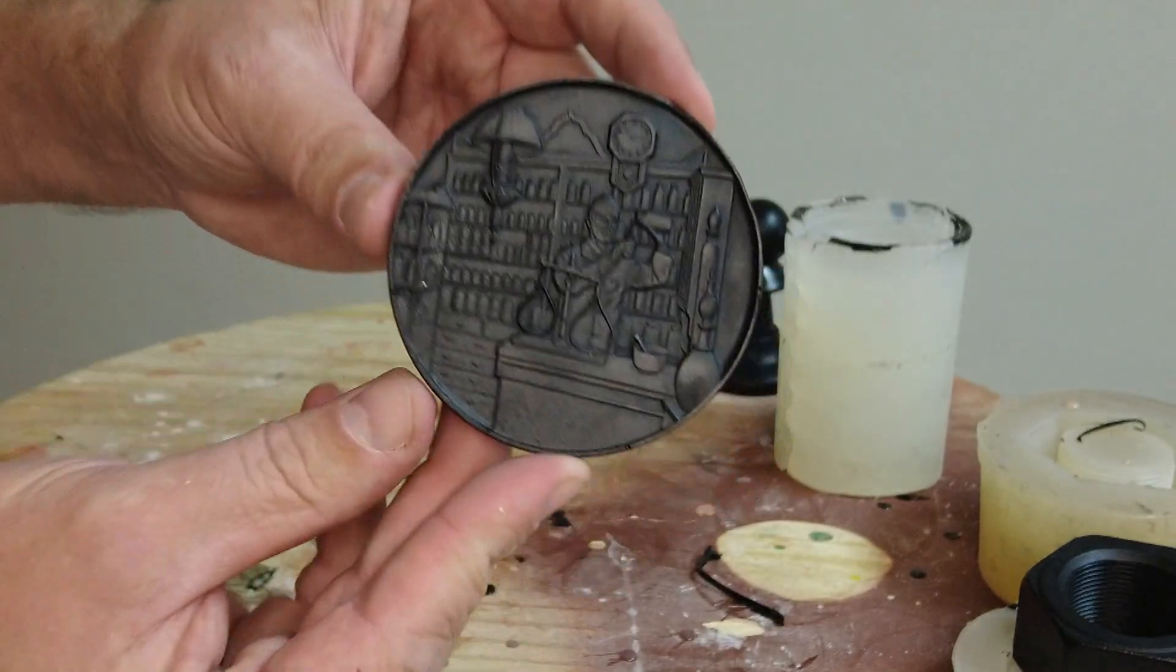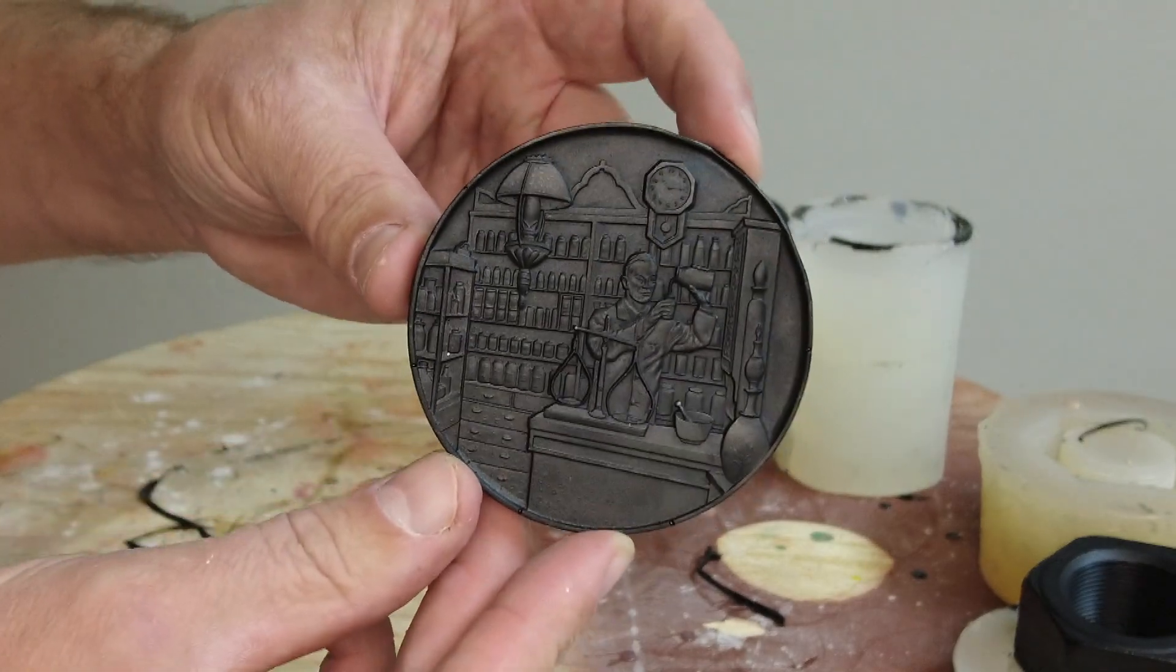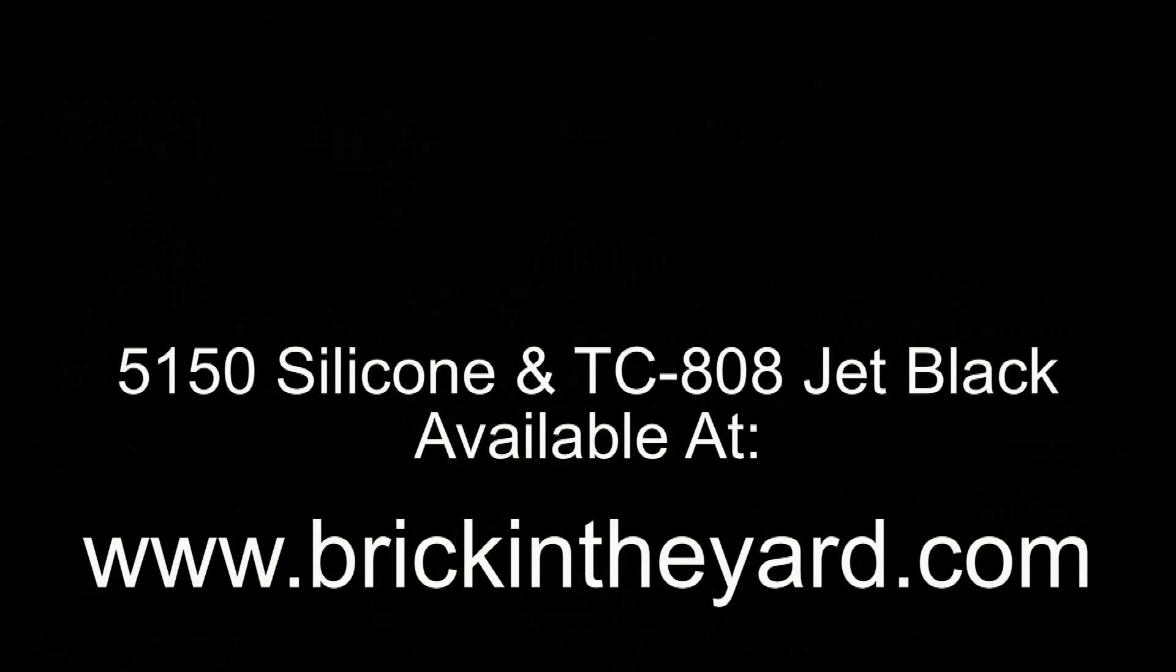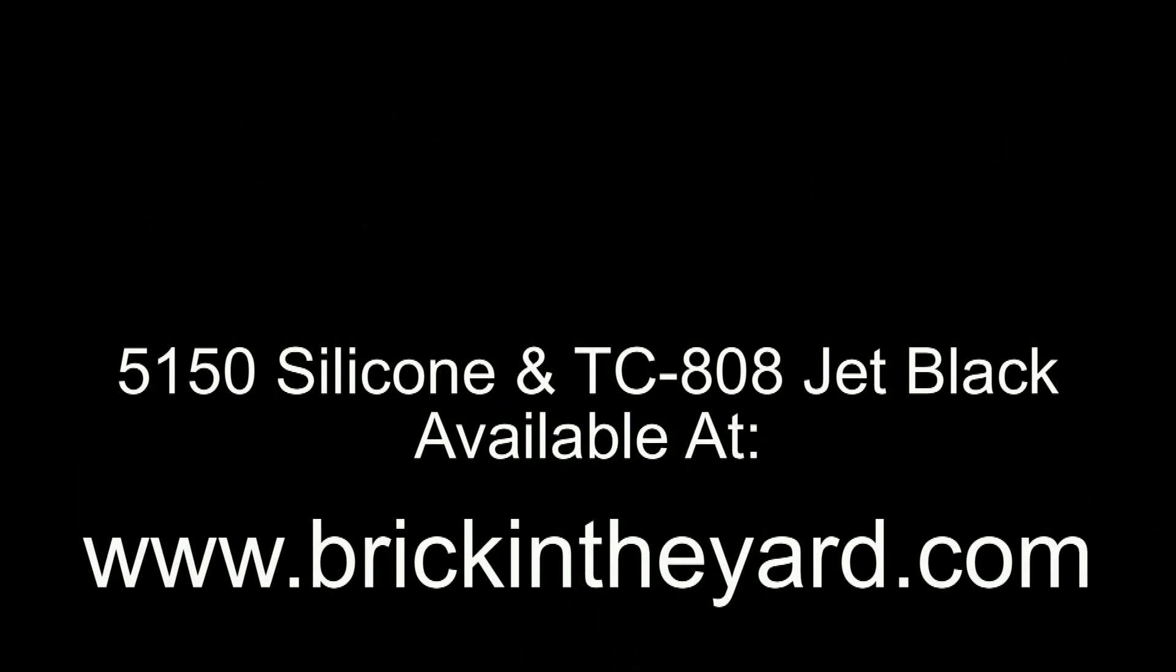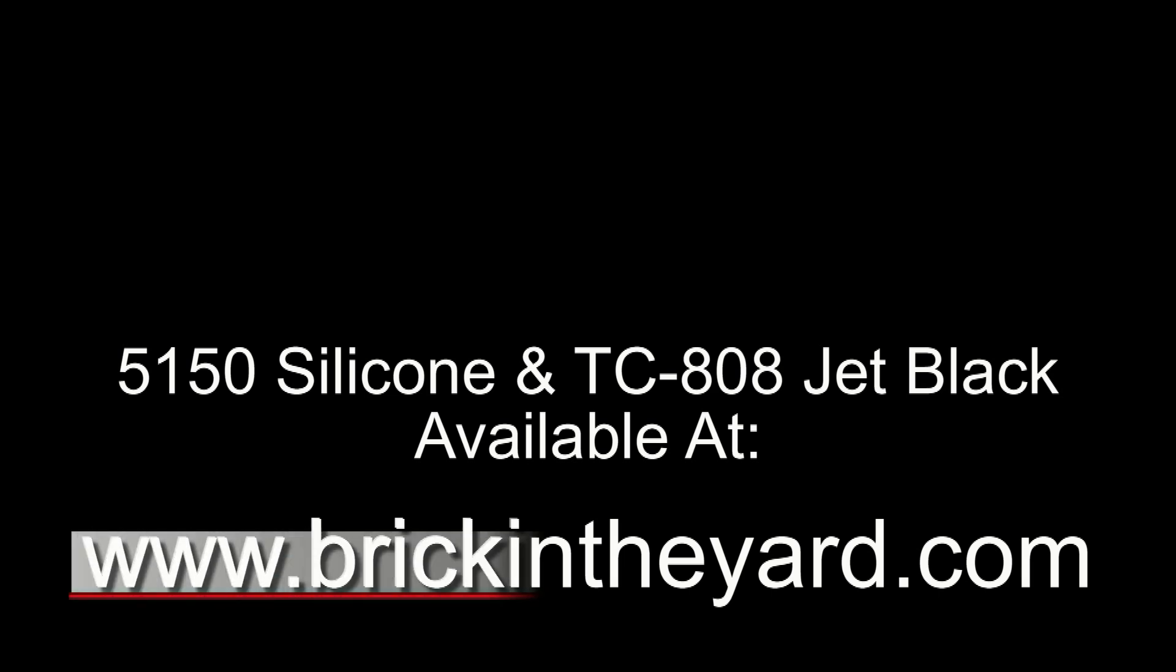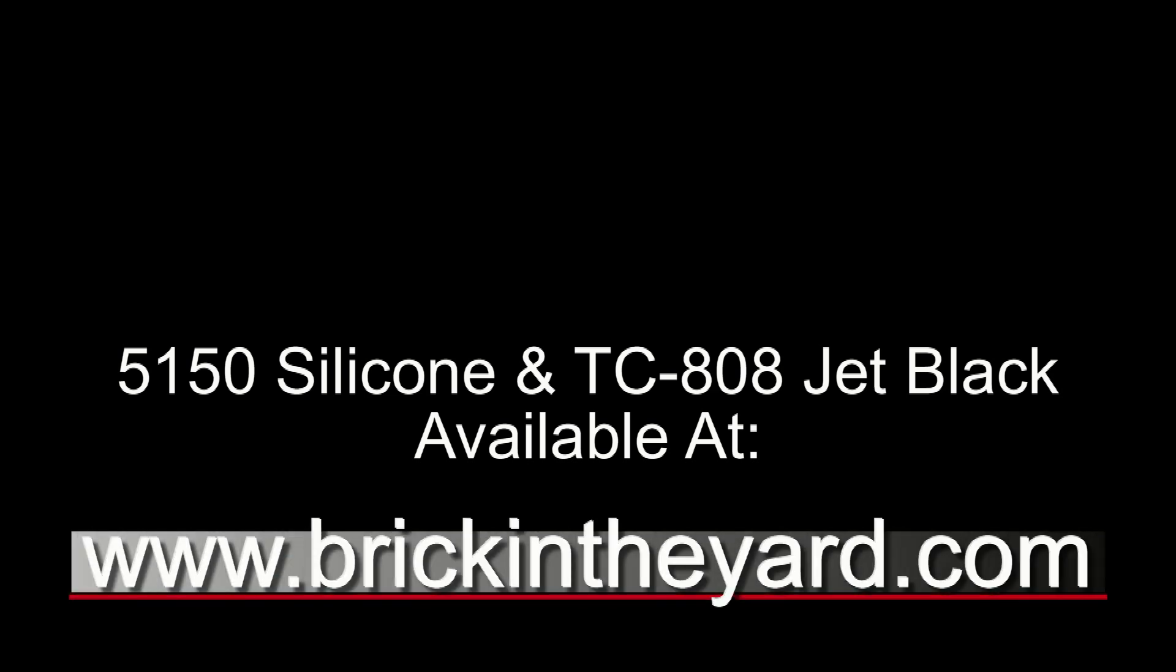So there you have the process of making a firm 5150 silicone block mold, a cut block mold, and of course a TC-808 jet black cast. As always, all of the materials we show in our videos are available on our website. So the 5150 silicone as well as the TC-808 at brickintheyard.com. As usual, I'll put the links to the products we use in our video in the video description. And if you haven't already, be sure to like and subscribe and click the little bell icon so you get notified when we turn out new content. Thanks again for watching.